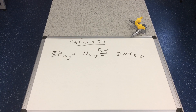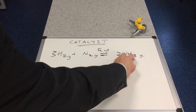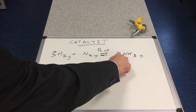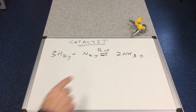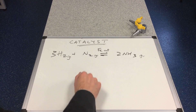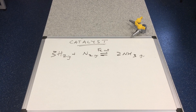Looking at catalysts, we use the Haber process equilibrium for the manufacture of ammonia: 3 moles of hydrogen gas and 1 mole of nitrogen in equilibrium with 2 moles of ammonia. An iron catalyst is used in this process. Catalysts provide an alternative route with a lower activation energy. The key question is whether the catalyst affects the position of the equilibrium — and the answer is no, because the catalyst increases the rate of the forward and reverse reactions by the same amount, so it does not shift the equilibrium position.